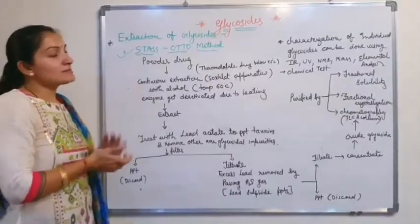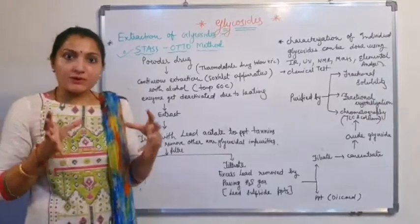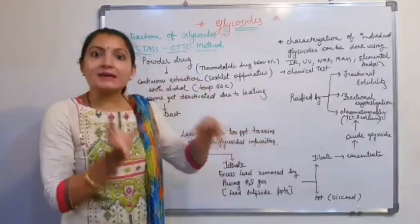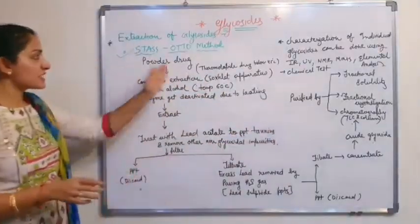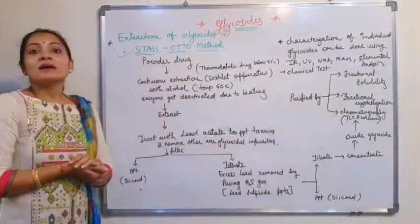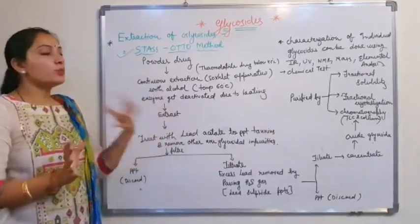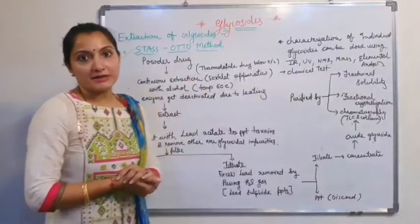In this method, we take the crude drug, dry it, and powder it. After powdering, we do continuous extraction by keeping the drug with alcohol in a Soxhlet apparatus.